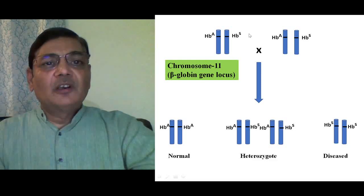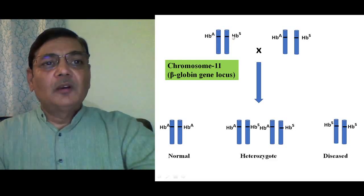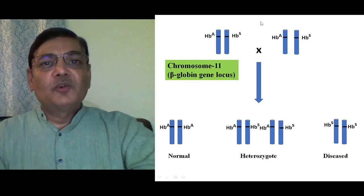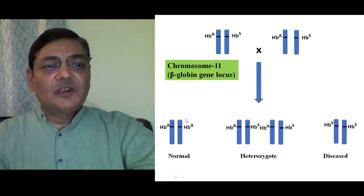Generally in the population, heterozygous people could be there. They are normal persons, and such people will have one normal allele HbA and another mutated one HbS. If a male person marries a woman with the same genotype — that is, if two heterozygotes marry each other — then in the next generation they will have a probability of all three outcomes. Twenty-five percent of their children will be homozygous normal with genotype HbA HbA.